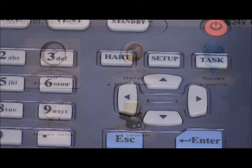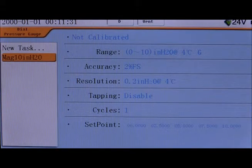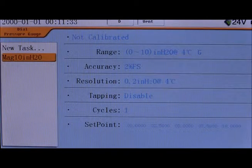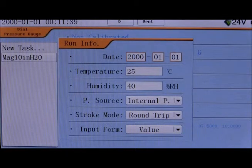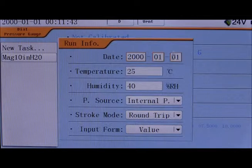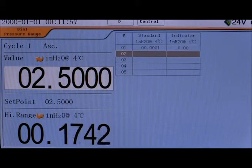With the 761, pre-programmed tasks can be set up and stored in the calibrator's memory. I've created a five-point test with the specifics of this gauge and saved it as a task. I'll select the task and then select Run to start the test. After confirming the environmental conditions and how the test is to run, press Next and the test will begin.